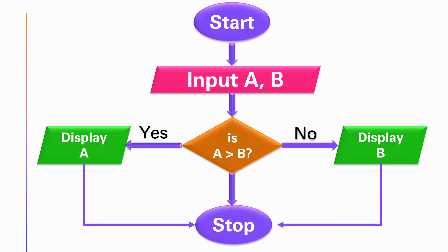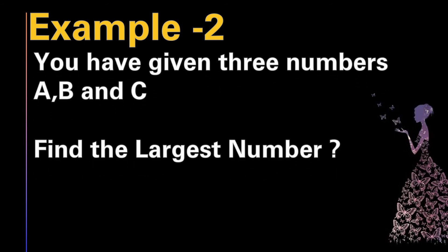Now let's draw a flowchart for Example 2. Here the question is: you have given three numbers A, B, and C. Find the largest number.